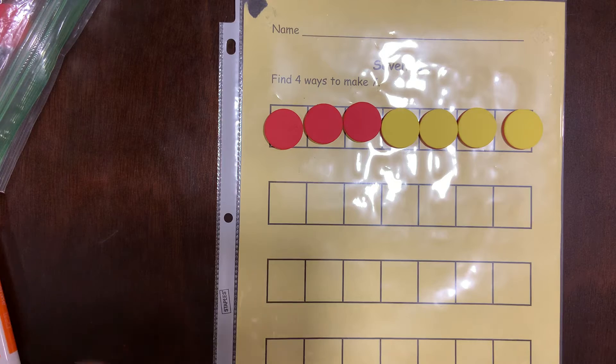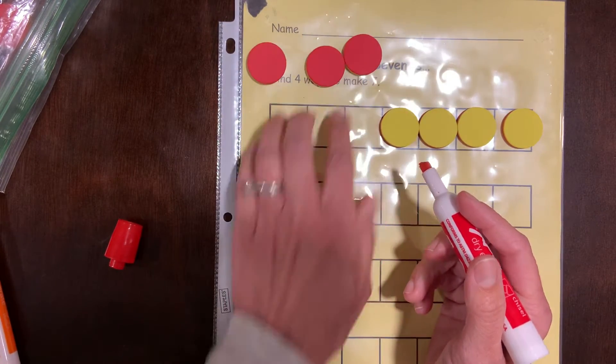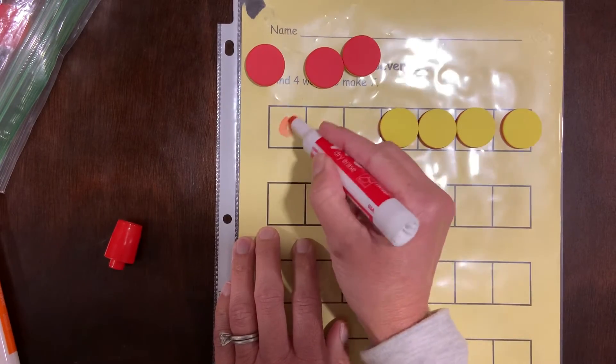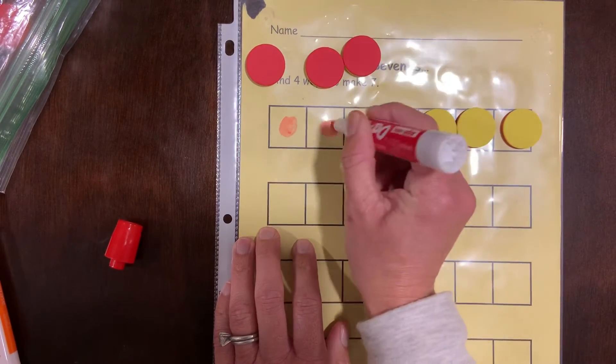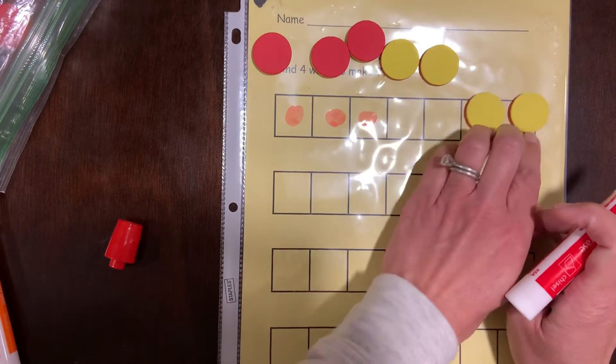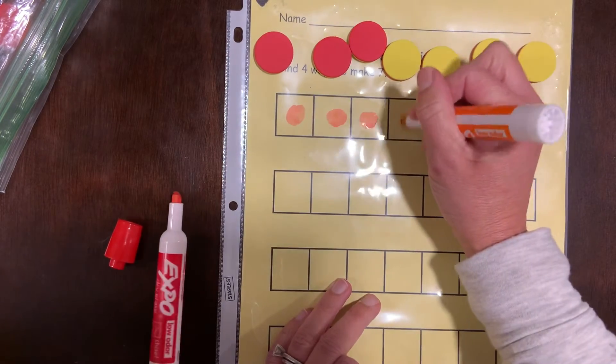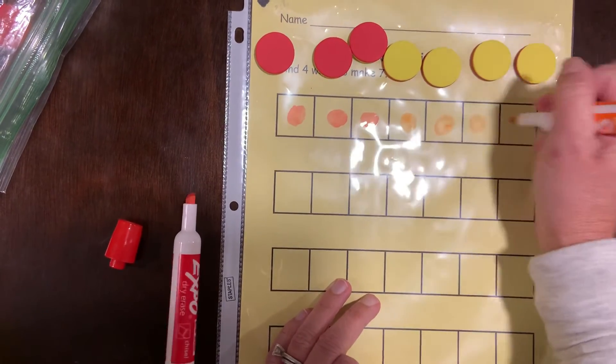So then you would do your recording job. You could slide off your three reds and draw yourself three red circles. And then you can slide off your four yellows. And I'm going to use an orange marker so you can see it. One, two, three, four.